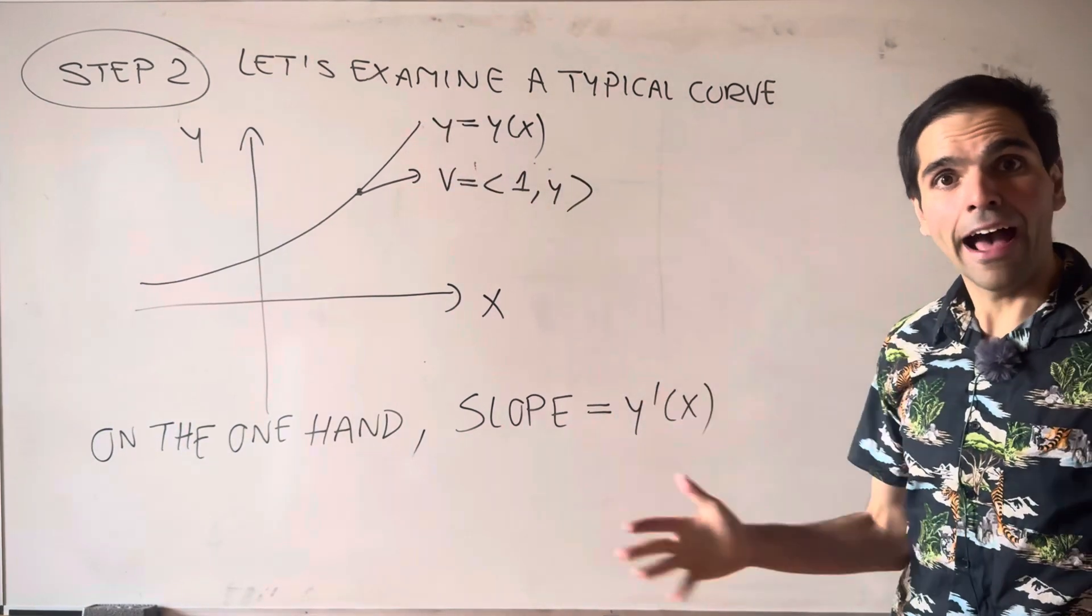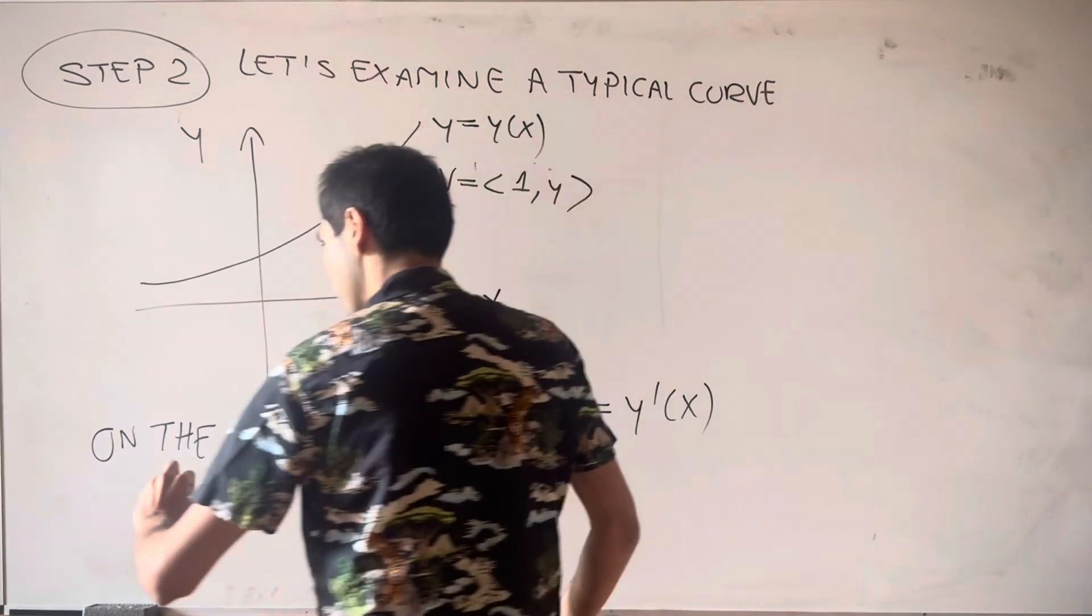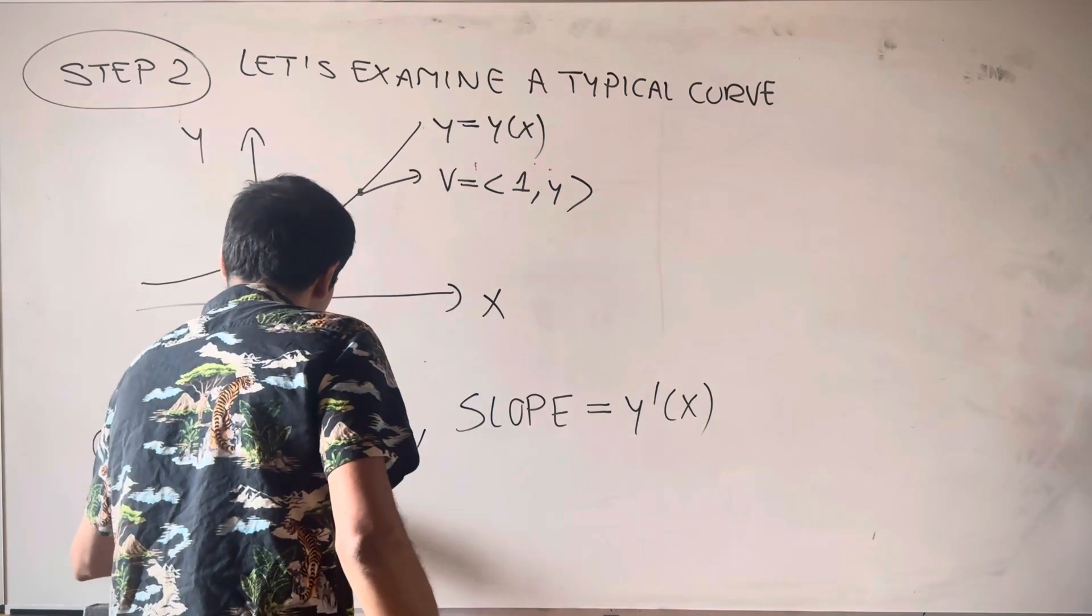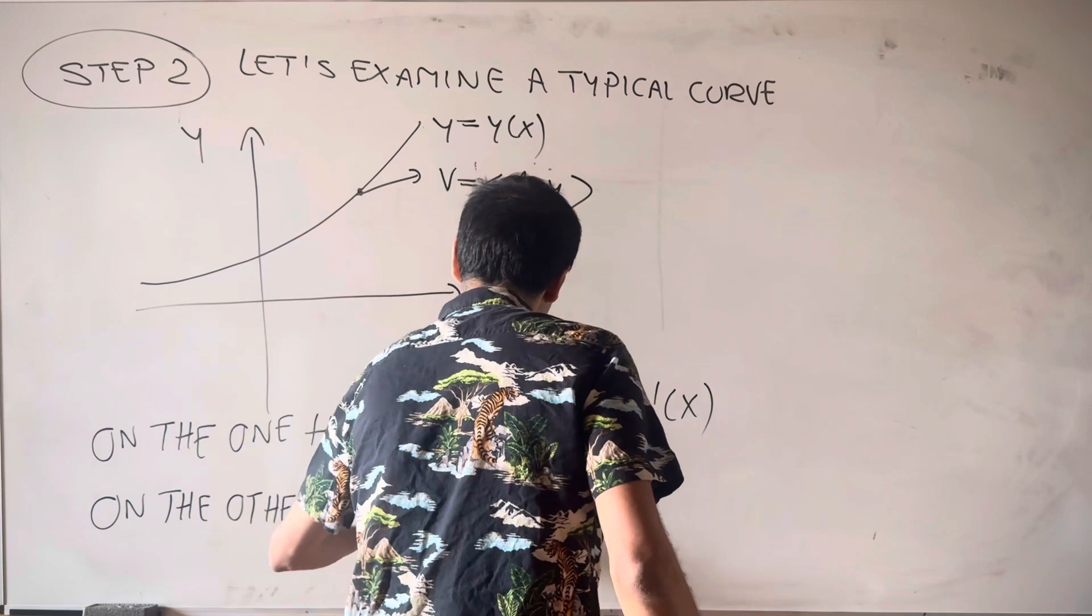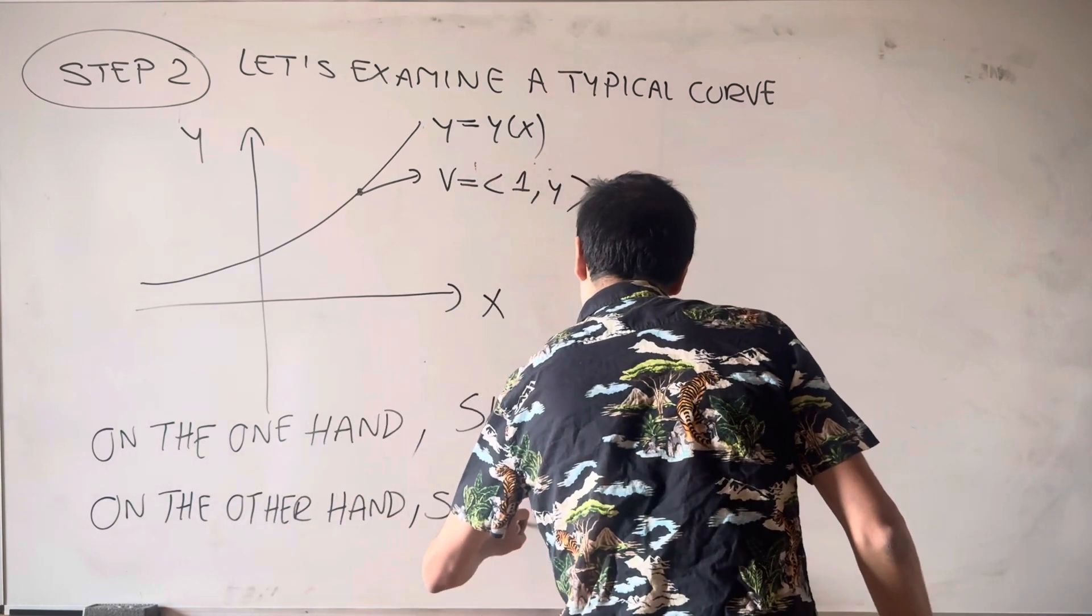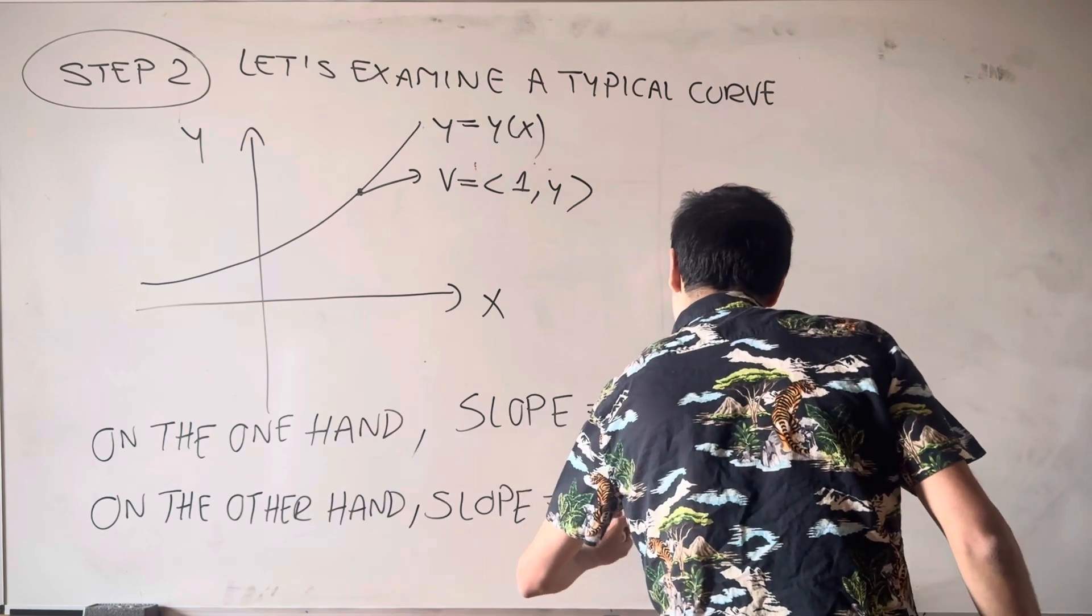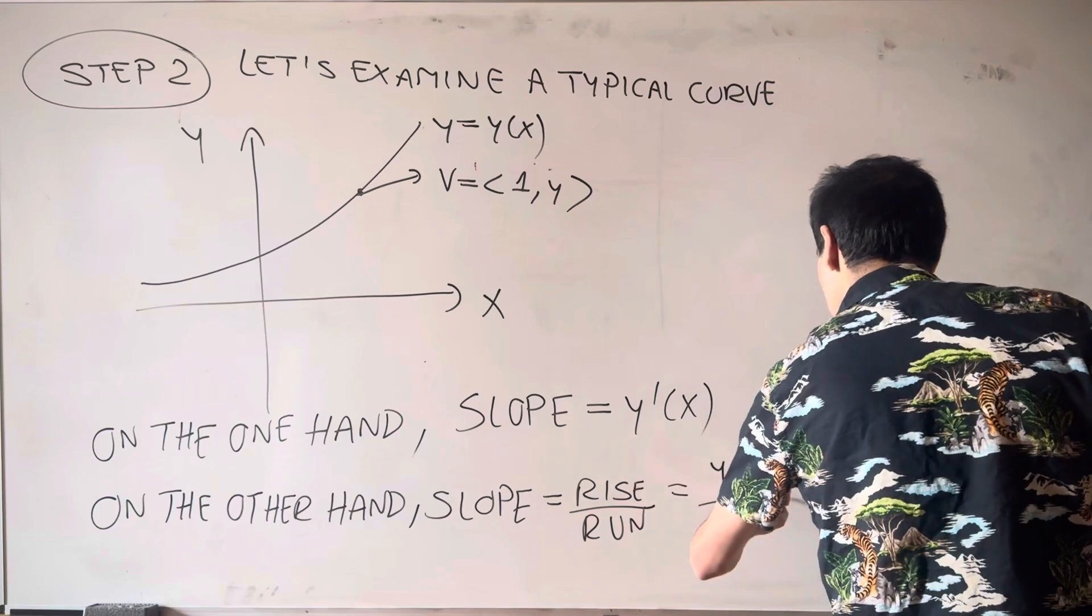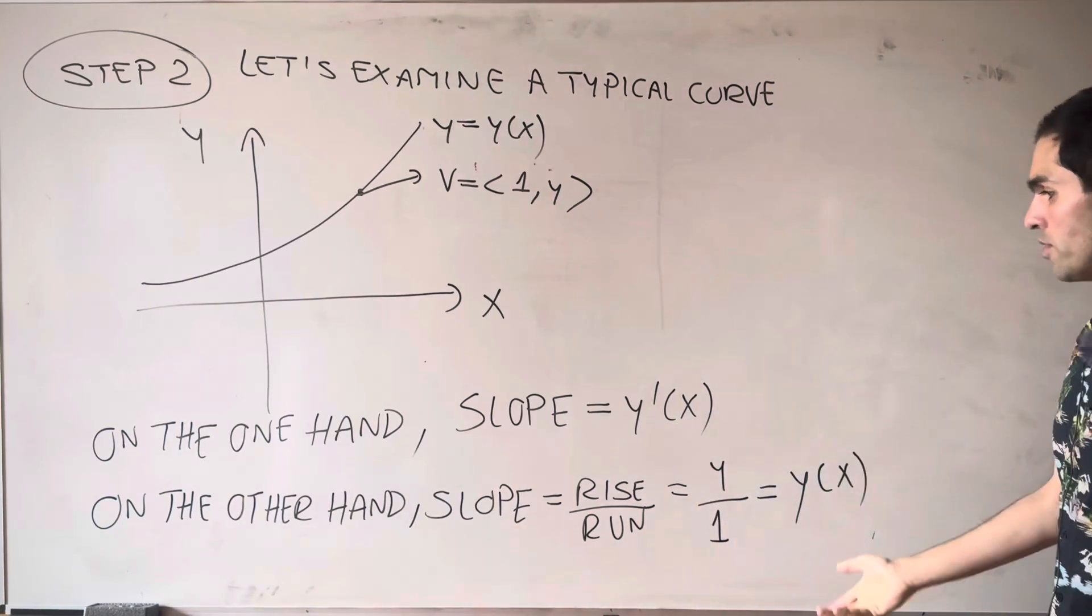On the other hand, based on what we've been discussing, the slope should be rise over run. So on the other hand, slope is rise over run, y prime, which is y over 1, which is y over x.